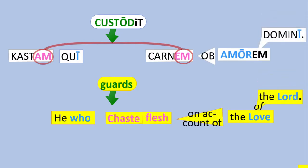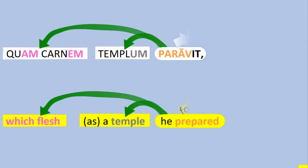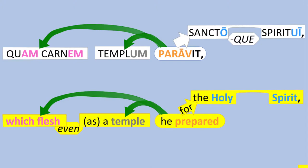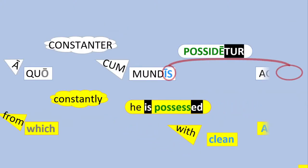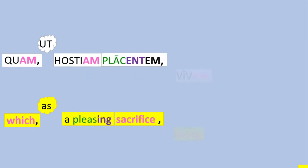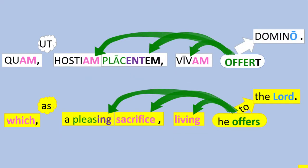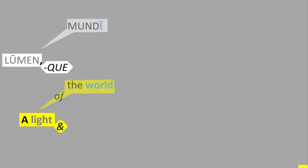castum qui custodit carnem ab omorem domini, quam carnem templum bravet sanctoque spirittui, ac quo constanter cum mundis posidetur actibus, quam ut hostiam placentem vivam offer domino